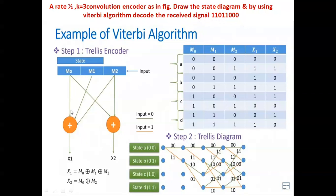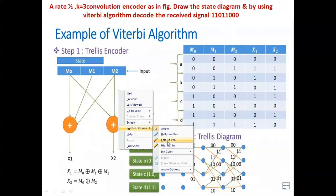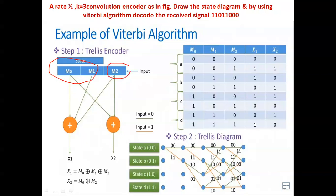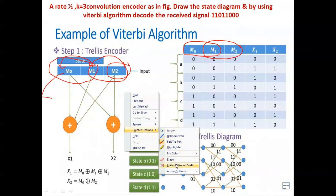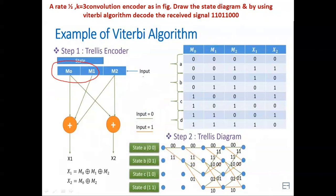Generally they give this kind of encoder diagram. Here M0 and M1 are the two bits representing the present state, and M2 is the input. When input M2 comes in, M1 moves to M0's place and M0 is shifted out. So for one shift we have the present state M0 M1, and if input is given the next state is M1 M2, meaning M0 is neglected and the remaining is M1 M2.